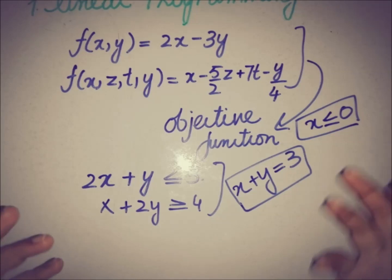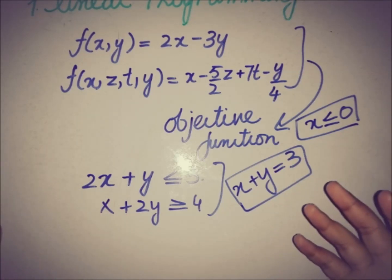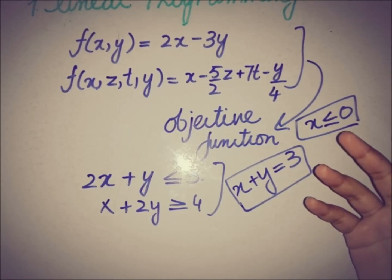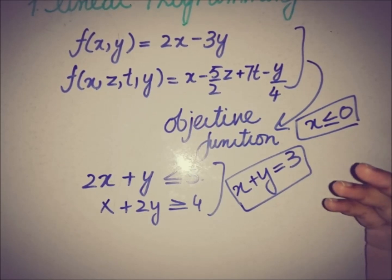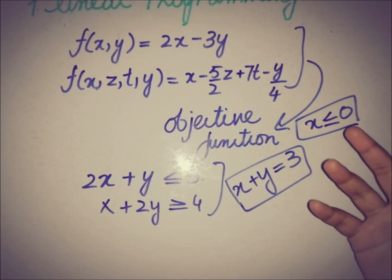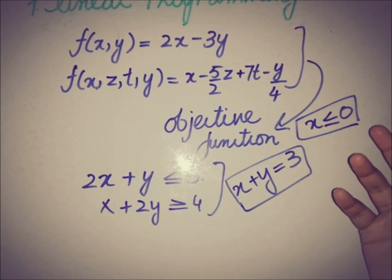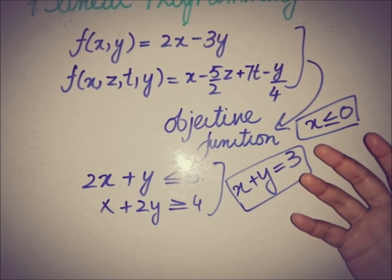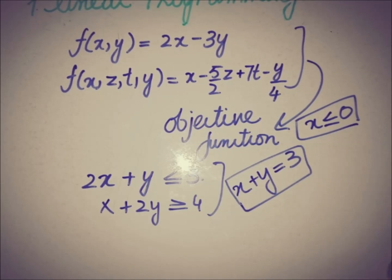So the three main components of a linear programming problem are: first, the objective function; second, the constraints; and third, all non-negative decision variables. The variables are non-negative because in decision-making problems, a negative value has no physical meaning — for example, having minus three products in the market doesn't make sense, so we don't allow negative values.